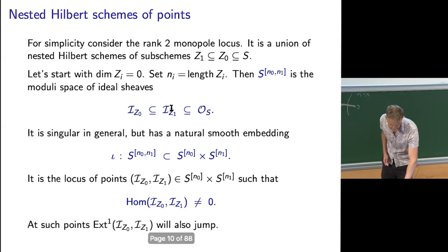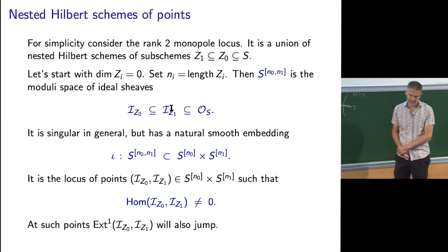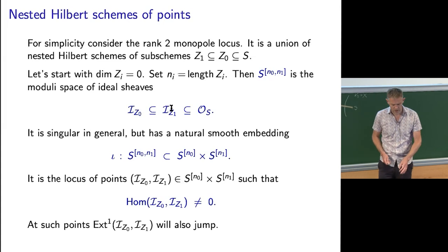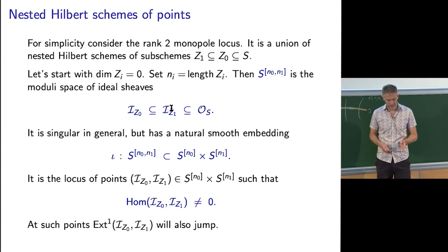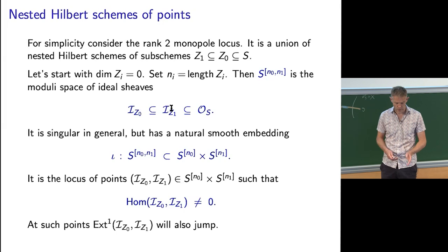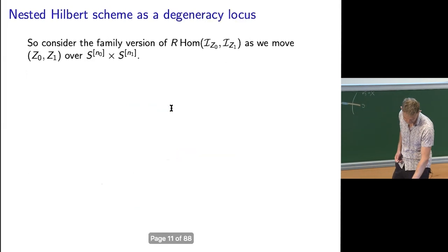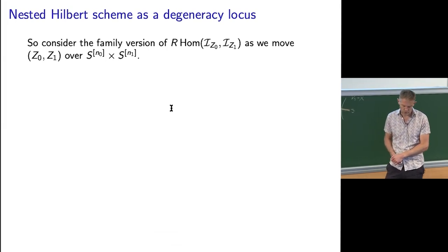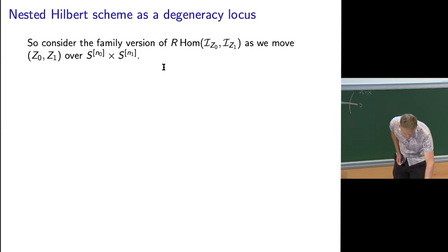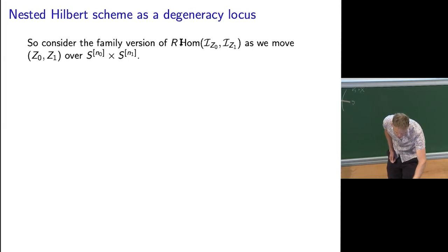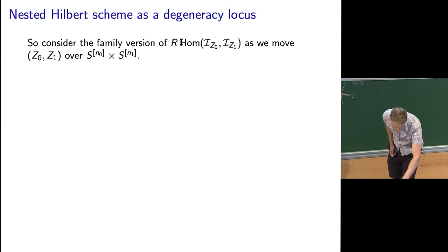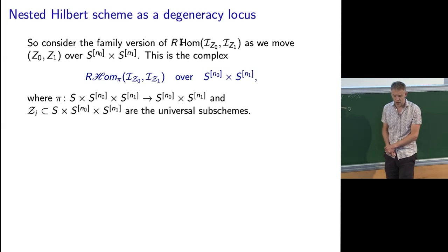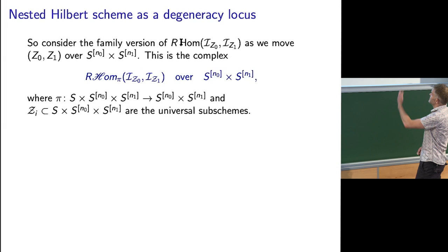It's singular in general but sits naturally in a smooth space — the product of Hilbert schemes S^{N_0} × S^{N_1}. We want to exploit the fact that these Hilbert schemes of points on surfaces are smooth. We want to see this as an example of the fantasy model — a global Kuranishi model — where we have a vector bundle over this smooth ambient space with a section cutting out the nested Hilbert scheme. That's not quite possible, but we have something very close: we can describe it as a degeneracy locus.